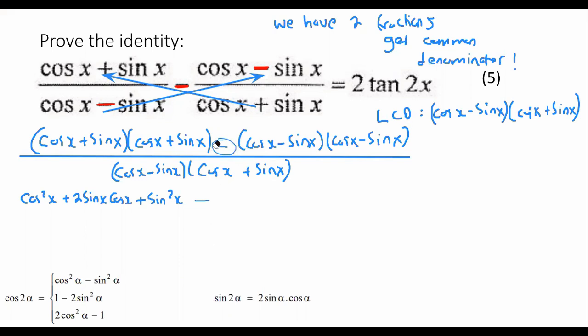That would give us cos squared x plus 2 sin x cos x plus sin squared x minus. Now, be careful with this minus, it catches a lot of students. Because you've got that minus, rather keep the answer in a bracket. So now we're going to multiply these two brackets together, and that would be cos squared x minus 2 sin x cos x plus sin squared x. And then all of that is over the denominator of cos x minus sin x times cos x plus sin x.